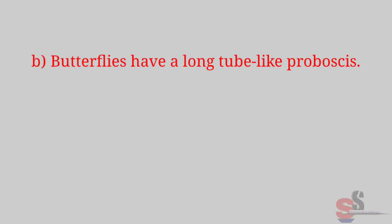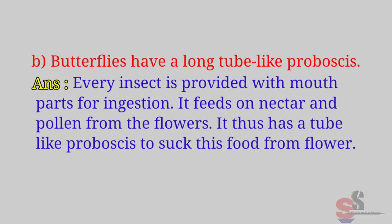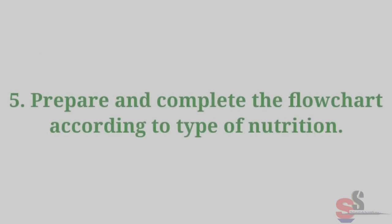B. Butterflies have a long tube-like proboscis. Answer: Every insect is provided with mouth parts for ingestion. Butterflies feed on nectar and pollen from flowers. They thus have a tube-like proboscis to suck this food from flowers.